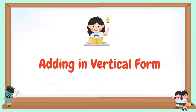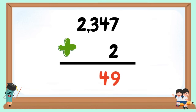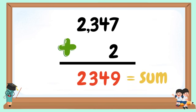Adding in vertical form: 2,347 + 2. 2 + 7 = 9. Bring down 4, bring down 3, and bring down 2. Our answer is 2,349.